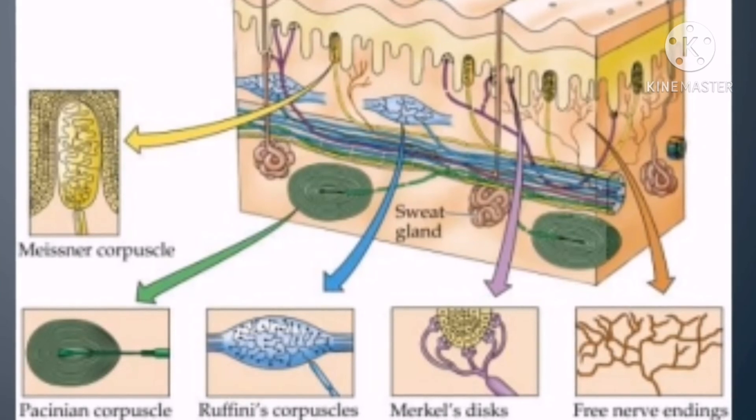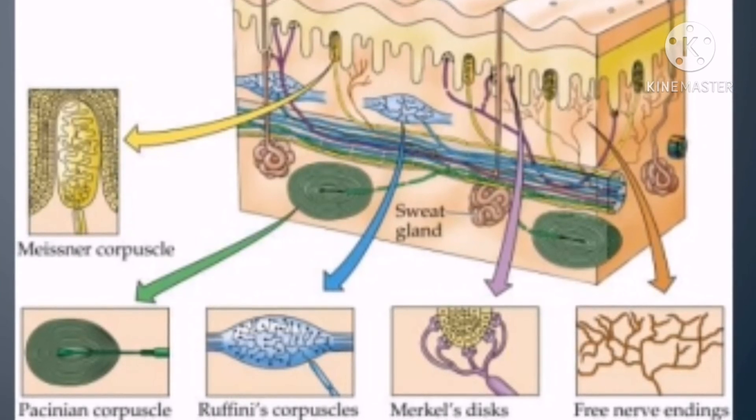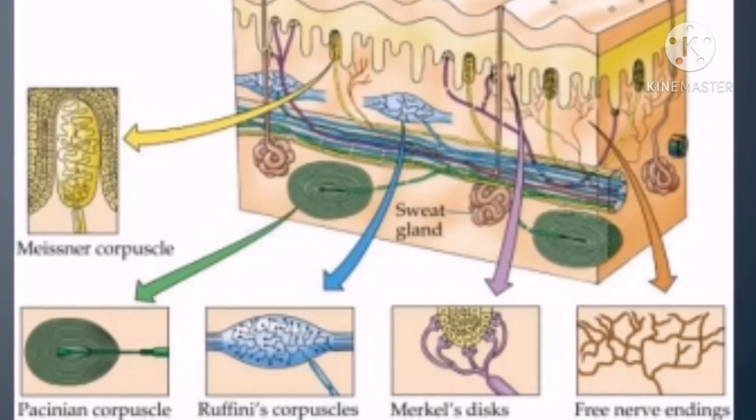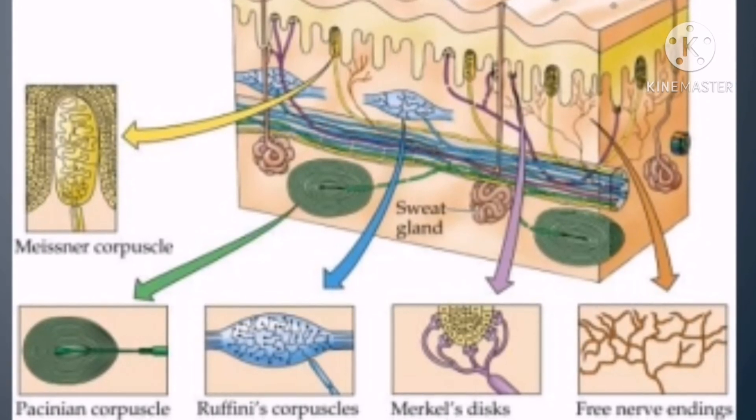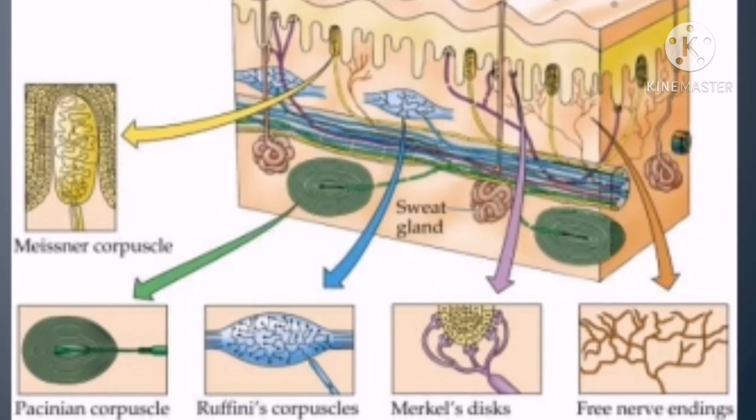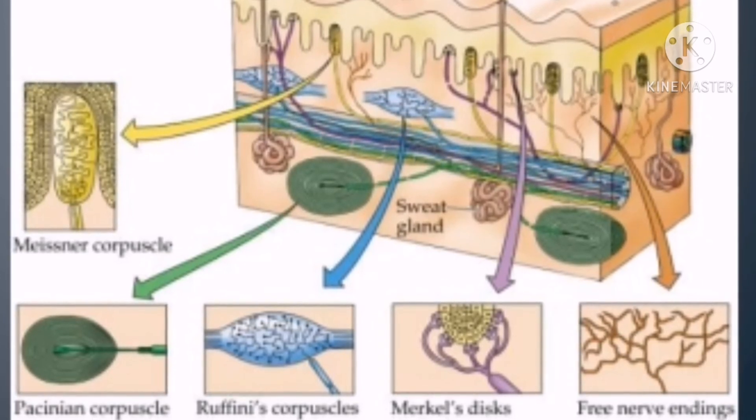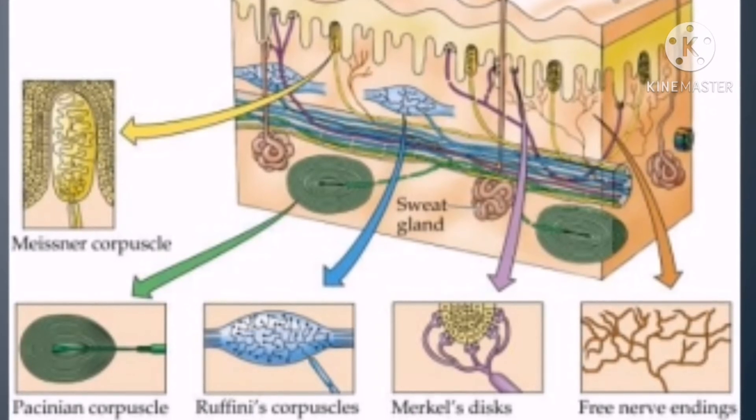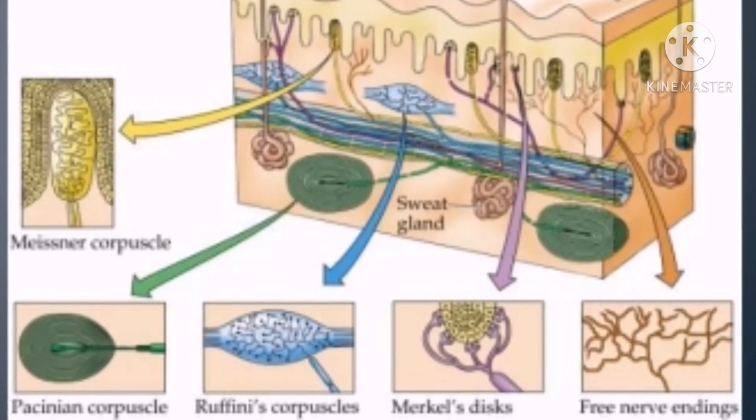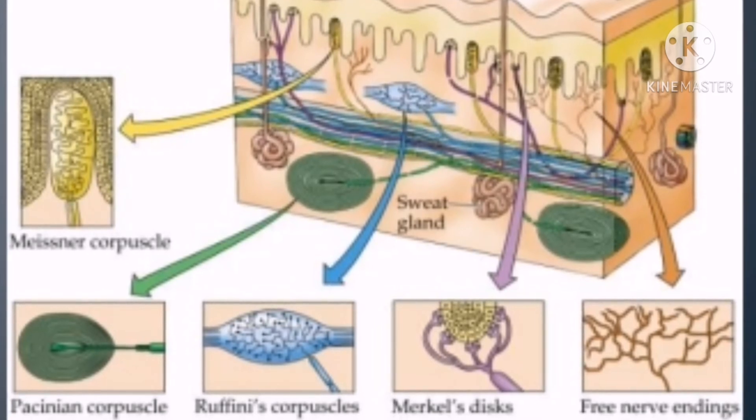The skin is the biggest organ of the body. It protects and covers everything that is inside the body. Dead skin cells are continuously replaced by new cells. The functions of the skin are to protect internal organs against the environment, control body temperature, and provide the sense of touch.